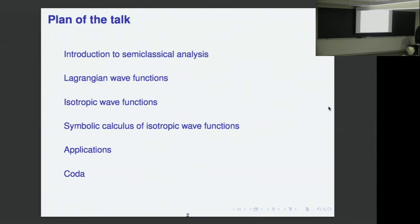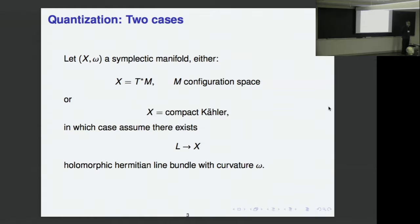The starting point is a symplectic manifold X omega. This is a bit like the beginning of Jonathan Weitsman's talk yesterday. I will take two cases running throughout the talk. Case one: X is a cotangent bundle, and N is called the configuration space. The idea here is that X has a real polarization — a geometrical polarization.